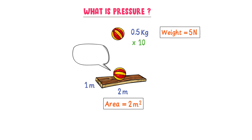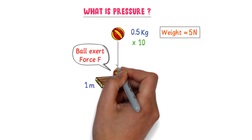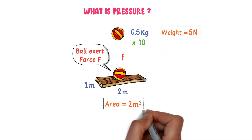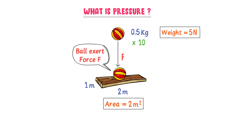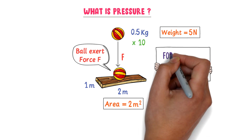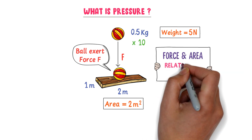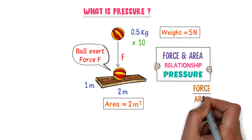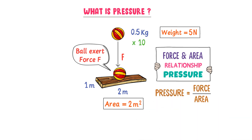That is, the ball exerts force F on this area A. Or I can say that the ball exerts 5 Newton force on the 2 meter squared area of the wooden sheet. Hence, there are two parameters: force and area. The relationship between force and area is called pressure. Force per unit area is known as pressure. We write: pressure is equal to force divided by area.